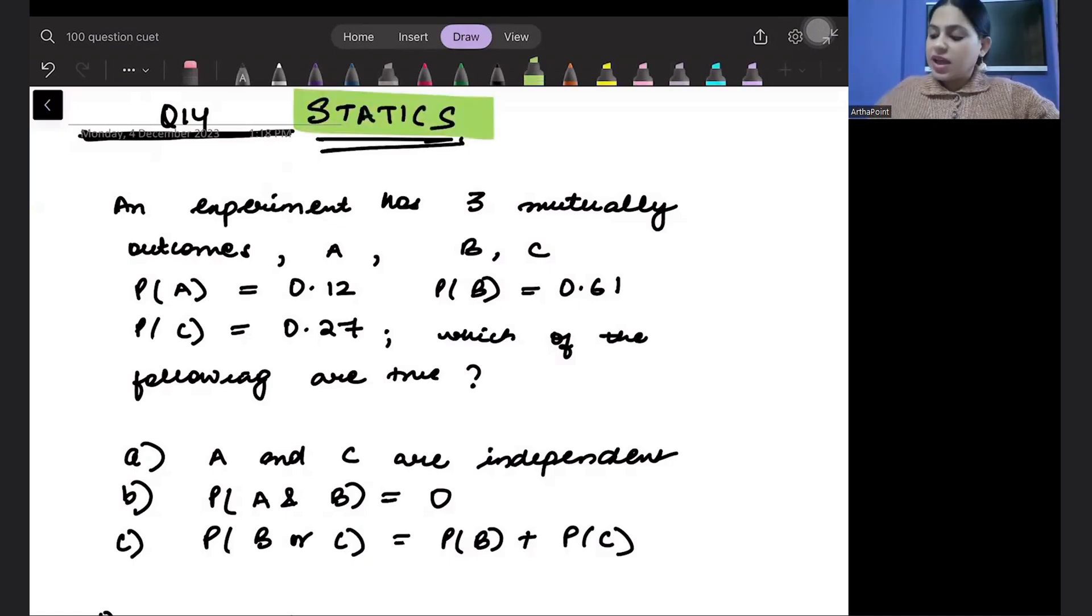Let us read the question beta. It says an experiment has three mutually exclusive outcomes A, B and C. Probability of A, B and C is given to you, which of the following statements are true?